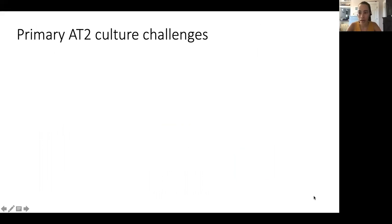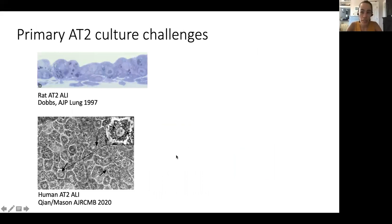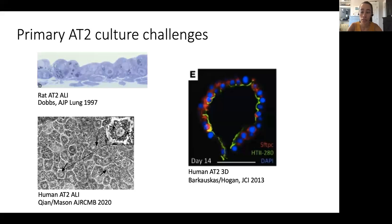But primary type 2 cells have their challenges for in vitro culture. Rat type 2 cells can be cultured at air-liquid interface, and we've known that for years. Very recently, a human type 2 cell air-liquid interface was published from Robert Mason's lab. And prior to this, we've known that we can culture primary type 2 cells in 3D, as published by Bridget Hogan's lab. These models have proven very useful, but are a bit limited because they require the digestion, access to, and dissociation of explant lungs to access these cells. So we would like to develop a system that allows for the study of environmental exposures to the alveolar epithelium in a way that's more tractable and self-renewing.